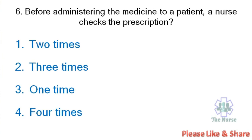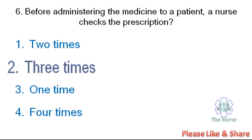Next question. Before administering medicine to a patient, the nurse checks the prescription: 2 times, 3 times, 1 time, or 4 times. The correct answer is 3 times. Before administering a medicine, the nurse should check the prescription 3 times to reduce administrative errors.